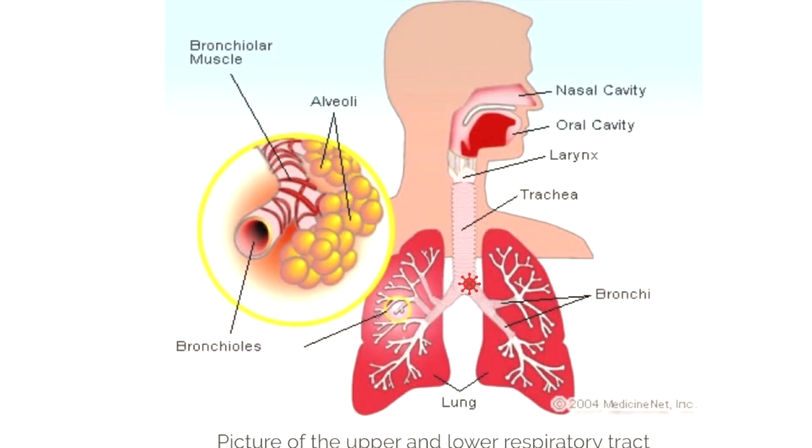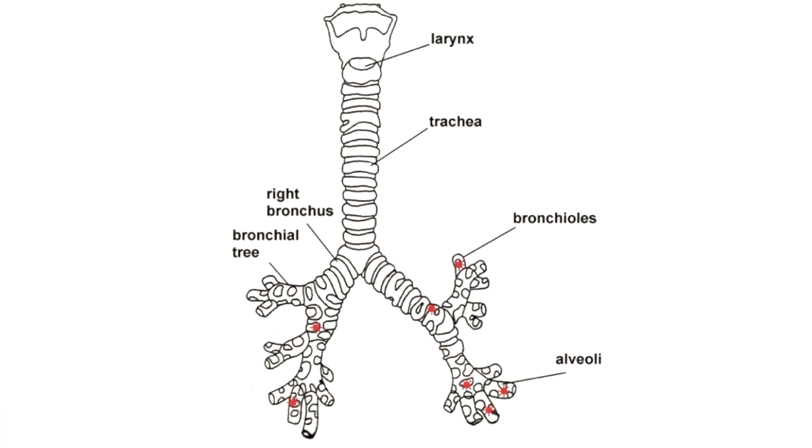Now let's move on to respiratory conditions — and this should be obvious. If your respiratory system is already weakened by asthma, COPD, or any type of respiratory condition, you are in danger. People with respiratory conditions need to take serious precautions to prevent coronavirus. The coronavirus attacks the respiratory tract, preventing the exchange of oxygen and carbon dioxide. It causes inflammation of the alveoli, which are responsible for transporting oxygen to the blood, and if your respiratory system is already depressed, adding coronavirus can be lethal.